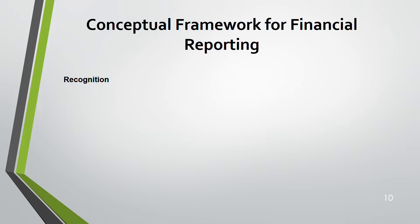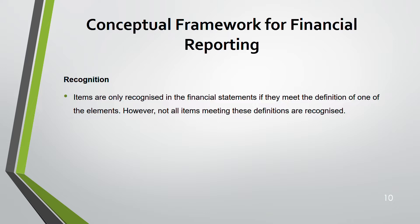Recognition, de-recognition, measurement bases, presentation, and disclosure — all of these from here onwards are very important for the rest of your SBR. You recognize something in the financial statements if it meets the definition of any one of the five elements: income, expense, equity, asset, or liability. However, not all items that meet a definition are recognized. Sometimes an item might meet the definition of an asset but still not be recognized — for example, internally generated goodwill.